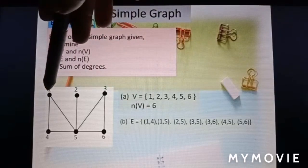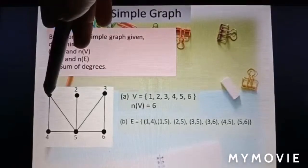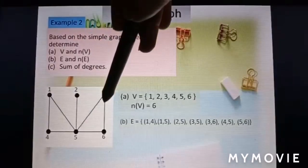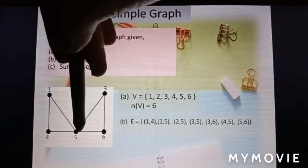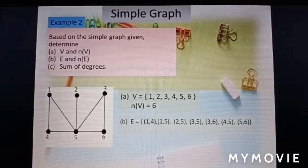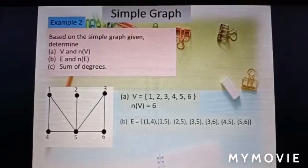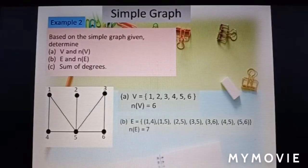Set of edges. We have (1,4), (1,5), (2,5), (3,5), (3,6), (4,5), and (5,6). So how many all together? 1, 2, 3, 4, 5, 6, 7. So number of edges is 7.